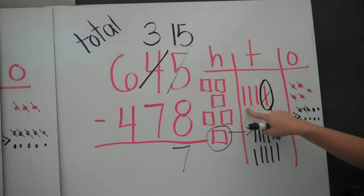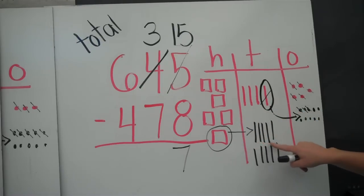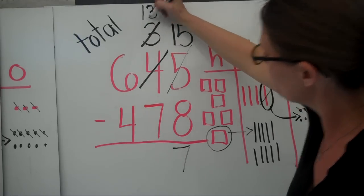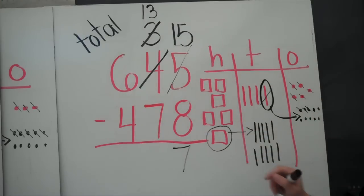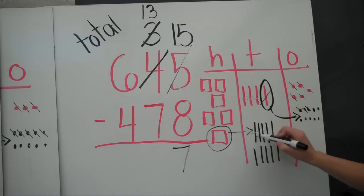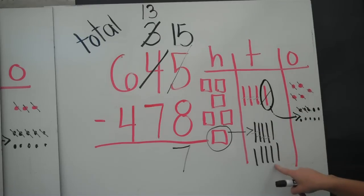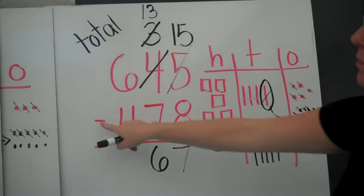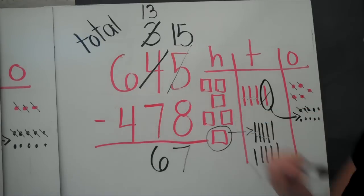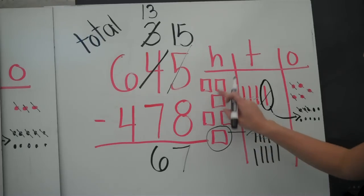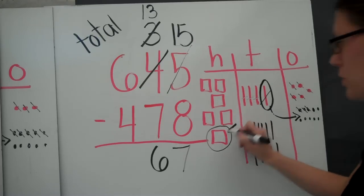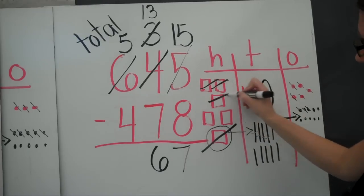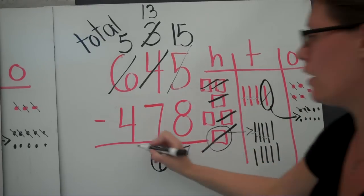Now I no longer have just 3 tens, I have 13 tens. Now I can do 13 minus 7. I end up with 6. 13 minus 7 equals 6. And then I can go into my hundreds column. Do I have 6 hundreds left? No, because I regrouped. I don't have 6, I have 5. 5 minus 4 is just 1 hundred left.